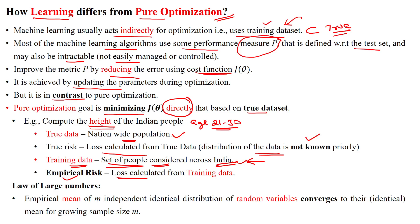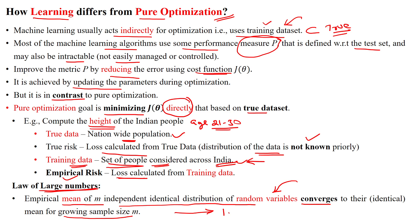Empirical risk is calculated over a large set of people by using the mean of independent, identically distributed (i.i.d.) random variables, where the random variables are the people involved in the height measurement. Taking the mean of all random variables converges to the true mean as the sample size grows — for example, increasing from 1 lakh to 10 lakhs. Finally, empirical risk can approximate the total risk using a set of training samples for the given problem statement.